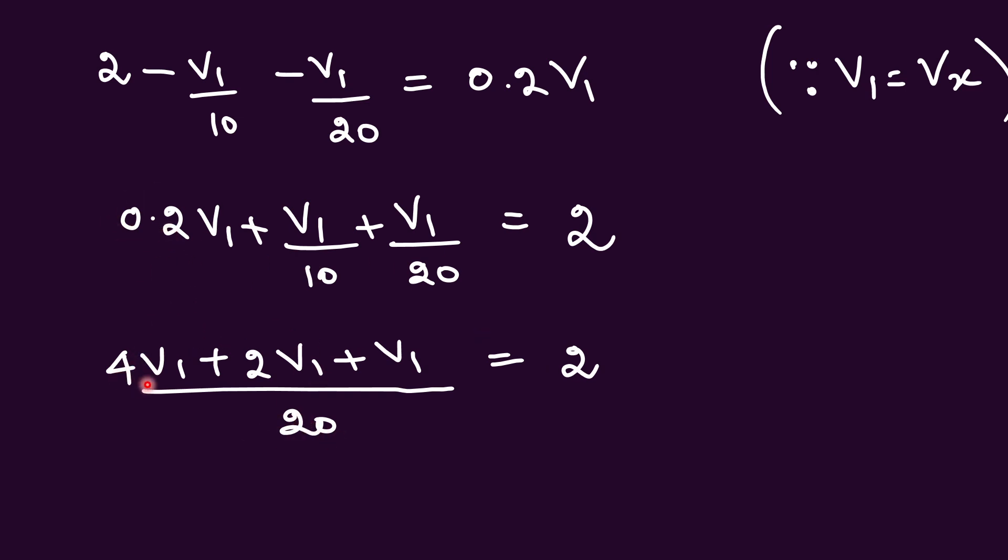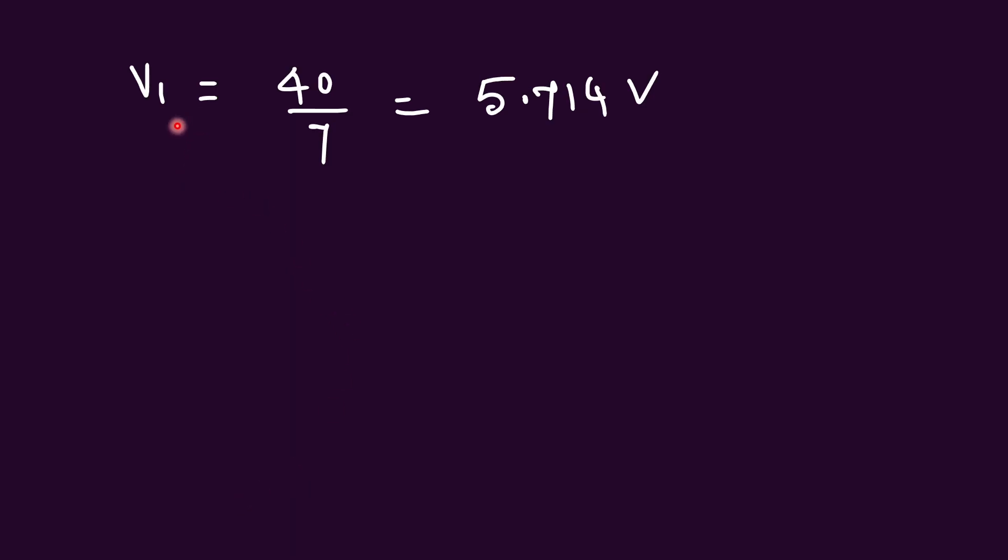Then we take the common denominator as 20. Multiply this term by 20. We get this as 4 V1 plus when you multiply this by 2 times you get 20 here. Numerator also we multiply by 2, so 2 V1 plus this is V1. That is equal to 2. Then we cross multiply these 2, 20 and 2, so we get this as 40. On this side when you add, we get this as 7 V1. So V1 is equal to 40 by 7. That is equal to 5.714 volts.